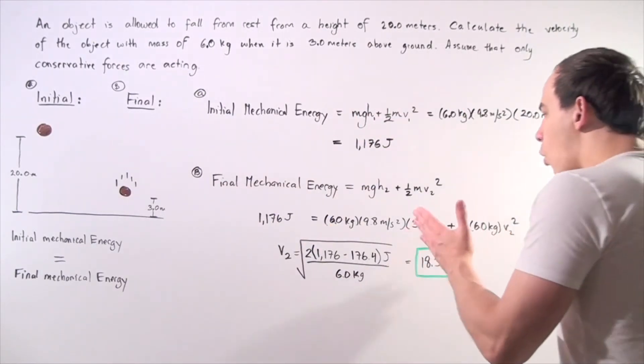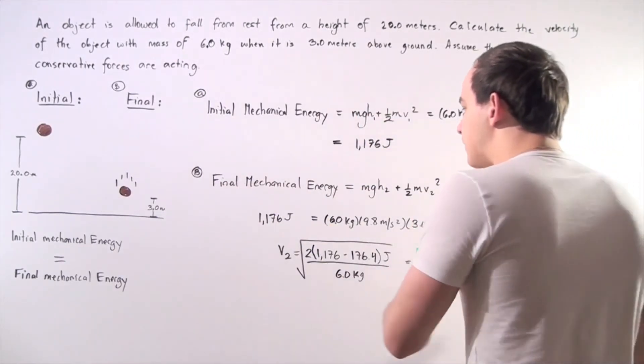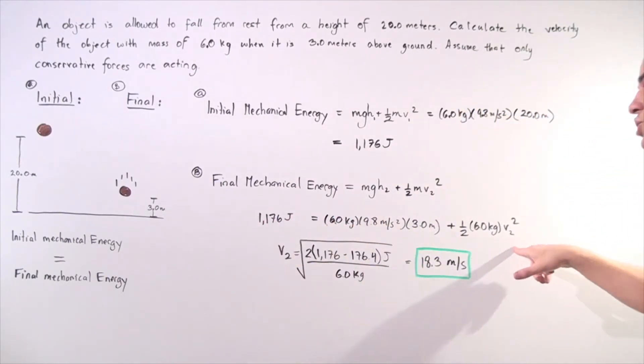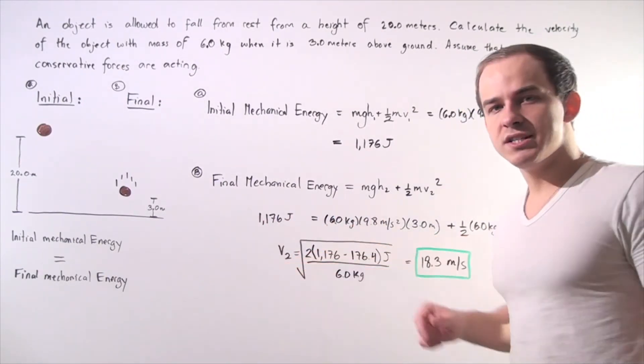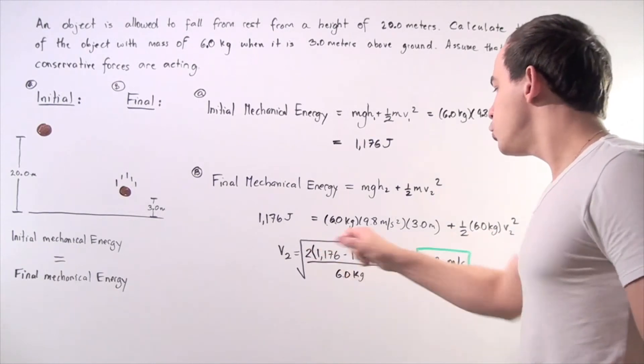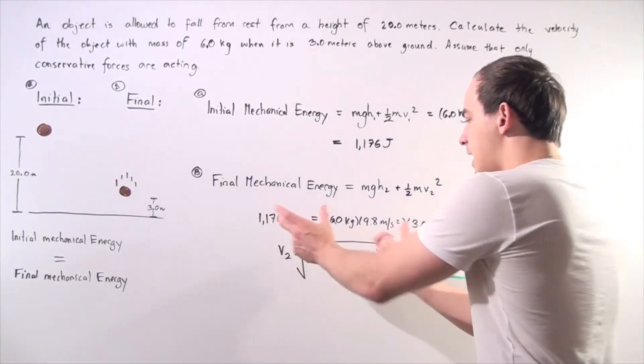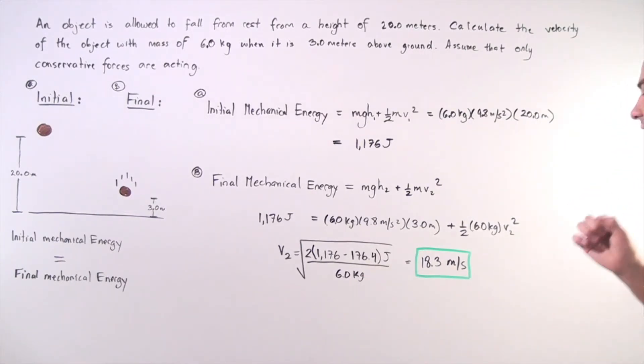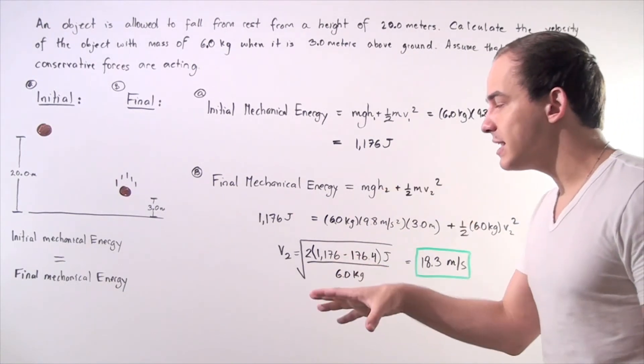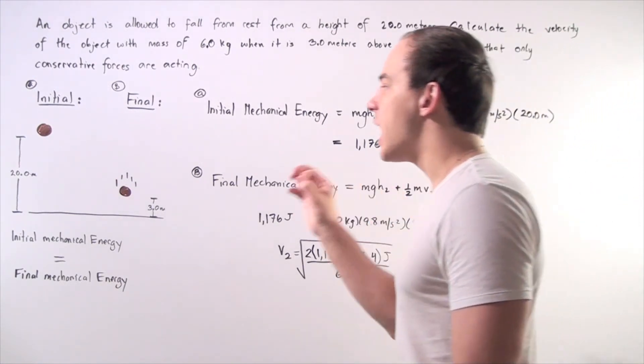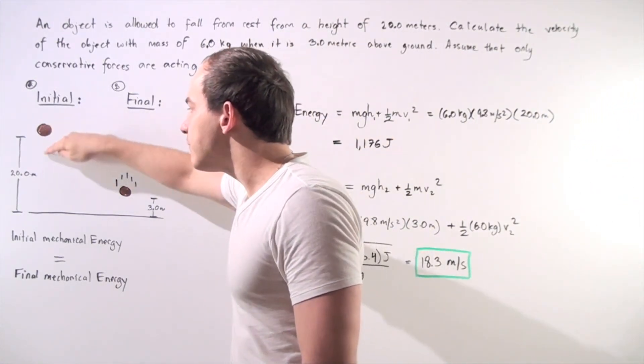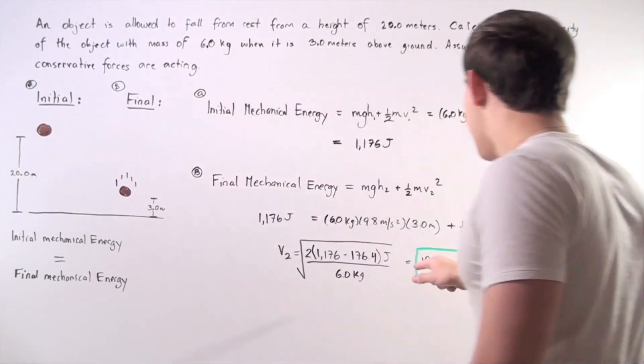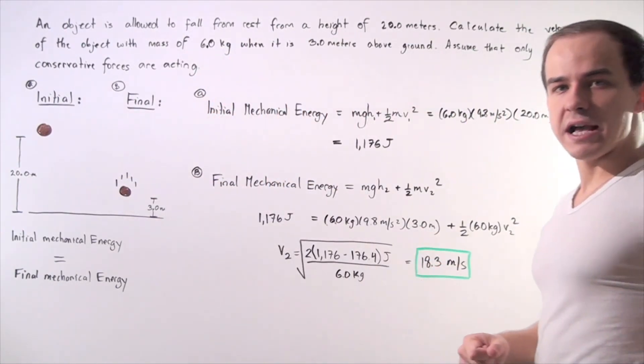So we bring all our known values to the left side and we solve for v2. We find that v2 is equal to the square root of 2 times the difference of these energies divided by 6 kilograms, and we get approximately 18.3 meters per second. So our object's final velocity when the object has traveled 17 meters is 18.3 meters per second.